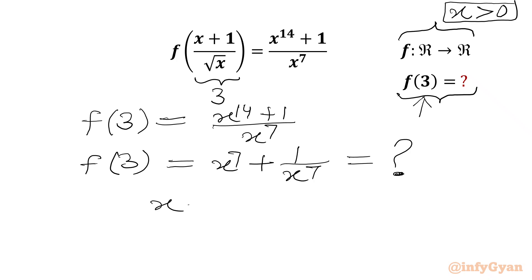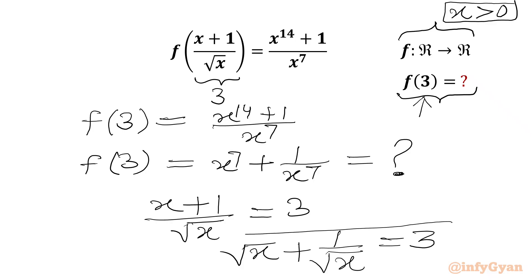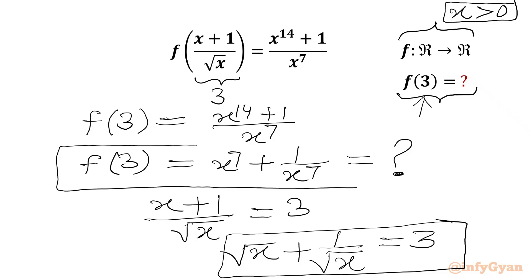Now we write x + 1/√x = 3. Splitting the numerator terms with respect to the denominator: x/√x is √x, so we get √x + 1/√x = 3. This equation is now known to us, and we are going to use it to calculate x⁷ + 1/x⁷.